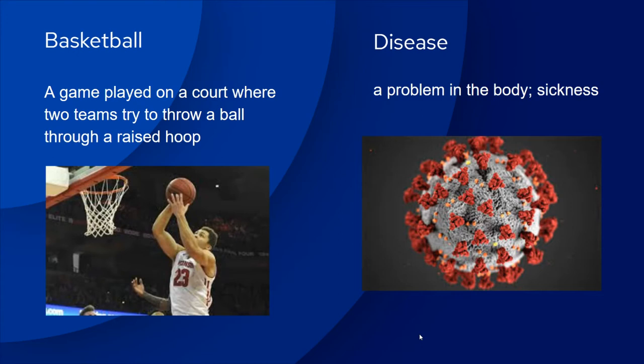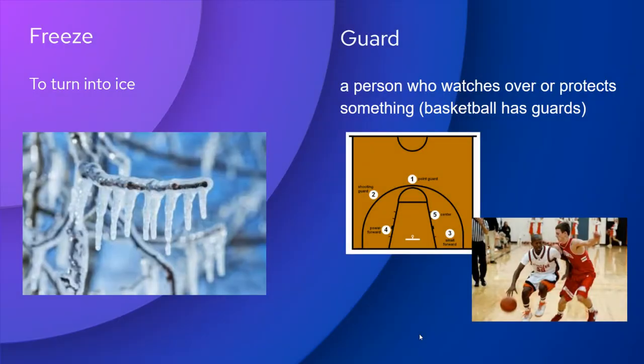Disease — that's a problem in the body or a sickness, and I use the picture of a coronavirus since that is what's in the news a lot right now. Freeze — that means just to turn to ice. When water freezes, we see that on the trees as icicles.